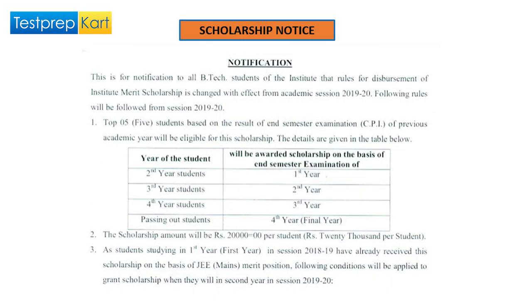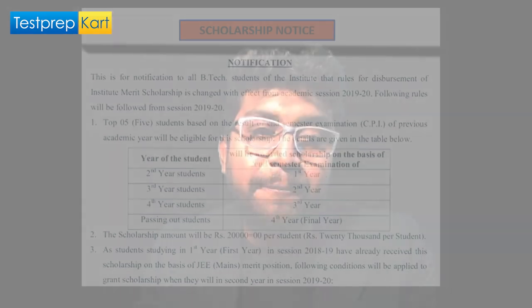Regarding scholarships: the top five students based on CPI (Cumulative Performance Index) from the end-semester result of the previous academic year are eligible. Second-year students are awarded scholarships based on their first-year results; third-year students based on second-year results; fourth-year students based on third-year results; and passing students are considered based on their fourth-year or final-year results.